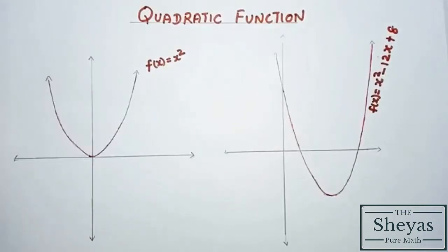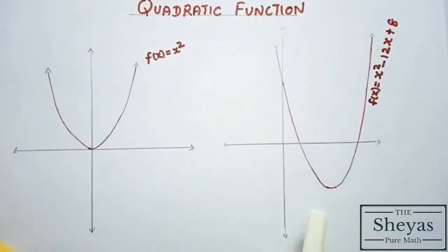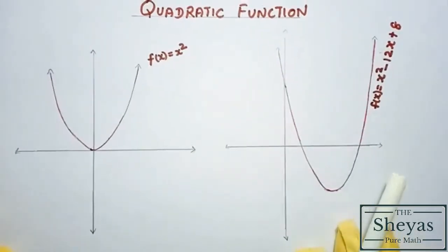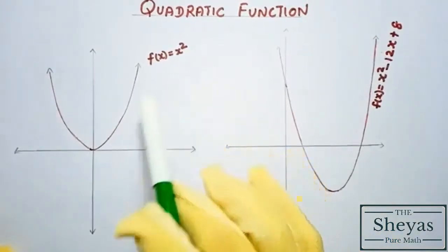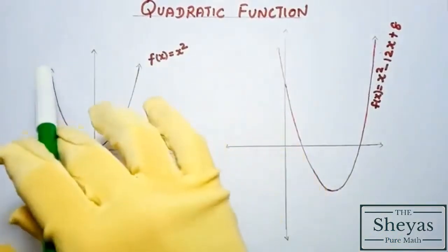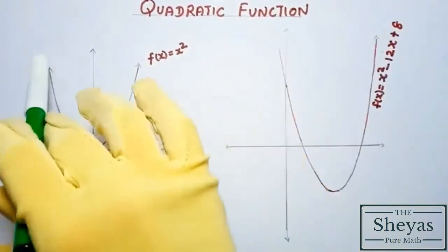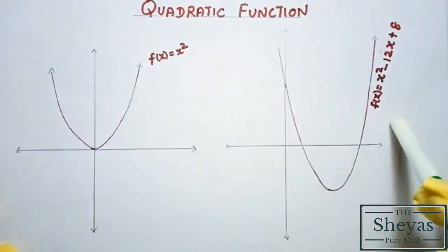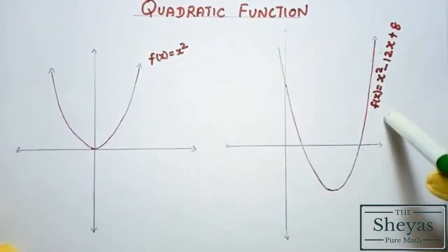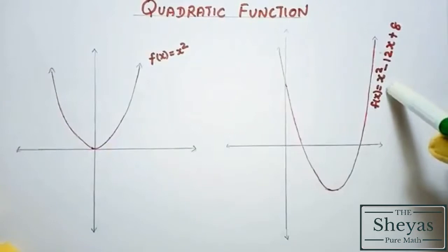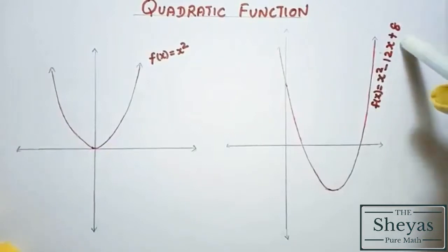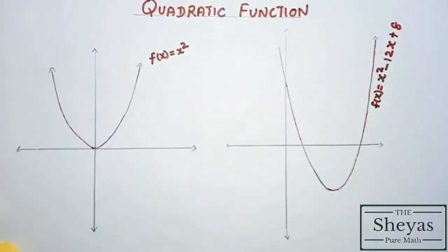Before that we have to know some points. This is the quadratic function f(x) = x², and the graph is u-shaped. This is again a quadratic function f(x) = x² − 12x + 8, and again it is a u-shaped graph.